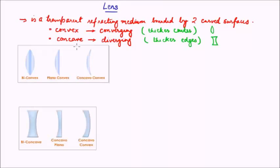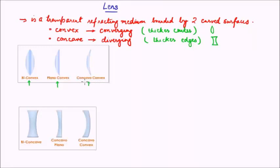Let us go into the subcategories of convex lenses. For convex, we can have a bi-convex lens, also called double convex or equi-convex, in which both surfaces are convex in nature. The second category for convex can be plano-convex — as the name suggests, one surface is a plane and the other surface is convex. And finally, we can have what is called concavo-convex, where there is one concave surface and one convex surface.